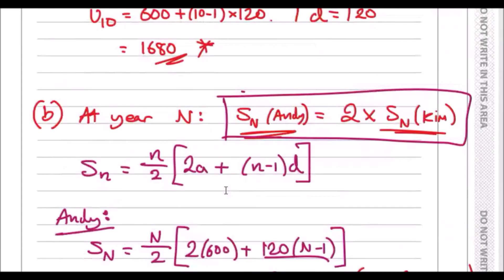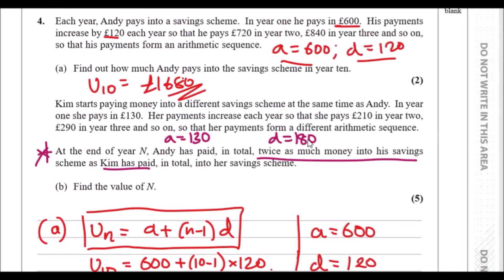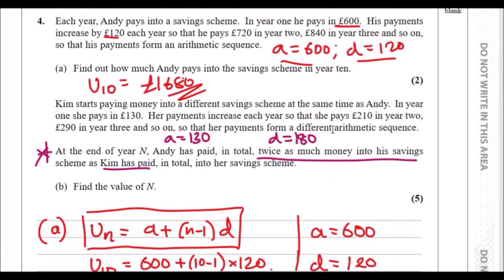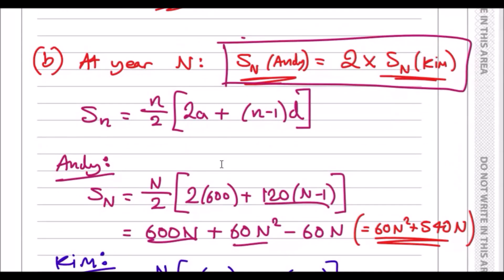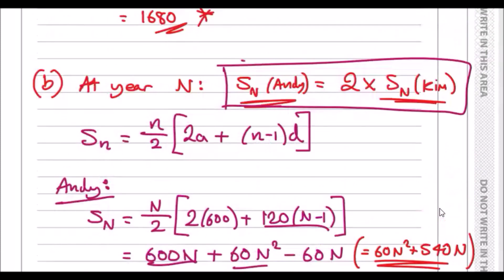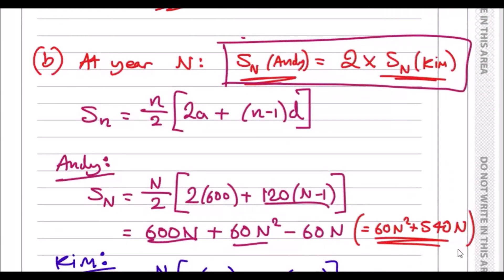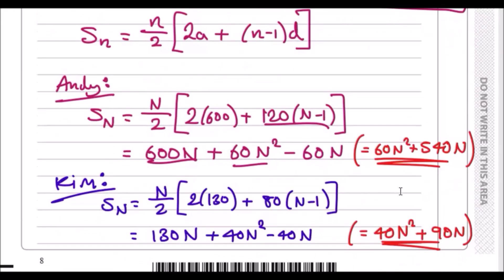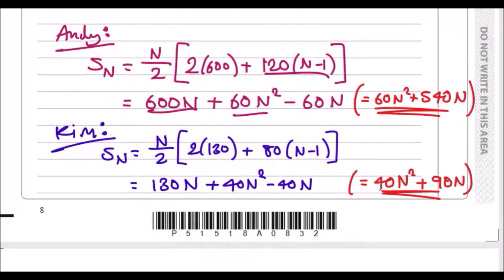So do the same for Kim as well, because this time Kim has a first term of 130 and a difference of 80 pounds. Plug it in and you should be good to go. And doing that, you should get 40N squared plus 90N. Now this is the main part. So once you come to this conclusion, put this back into the original equation here. So the sum of Andy would equal two times the sum of Kim. So it would be 60N squared plus 540N equal to two times this, so 80N squared plus 180N.